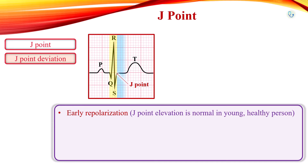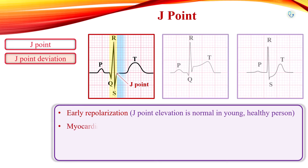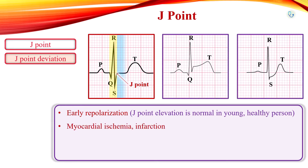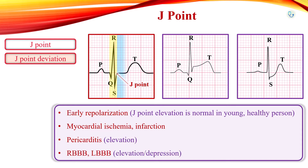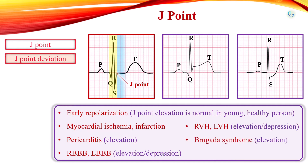The deviation in J-point from the baseline can also be observed in myocardial ischemia and infarction, pericarditis, right bundle branch block, left bundle branch block, right ventricular hypertrophy, left ventricular hypertrophy, Brugada syndrome, and digitalis effect.